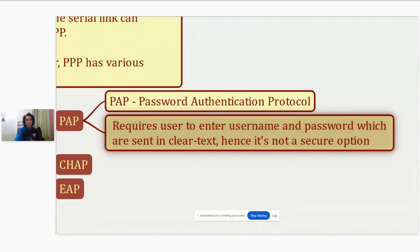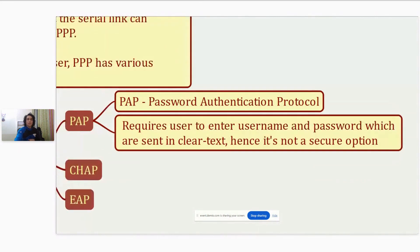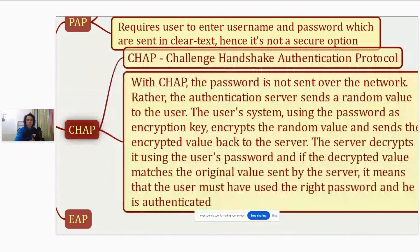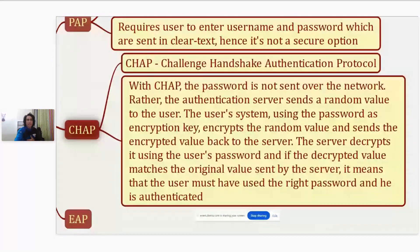PAP only requires the user to enter a username and password, and those details are sent over the network in clear text, so anybody can look into that traffic if they were to snoop on it. A slightly more secure option that is available is called CHAP, which stands for Challenge Handshake Authentication Protocol.